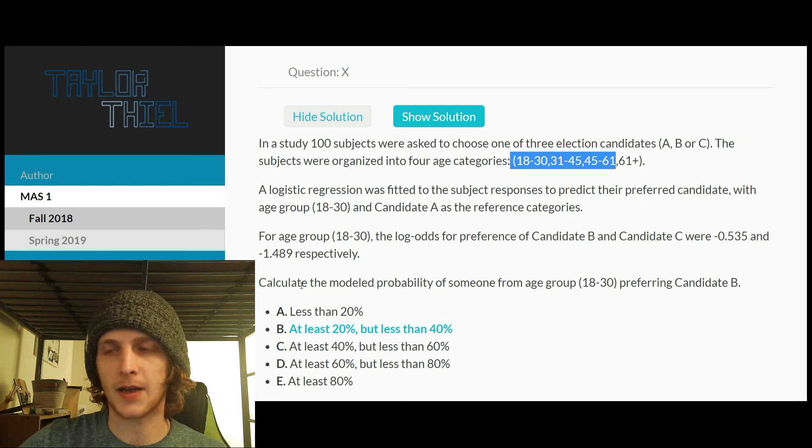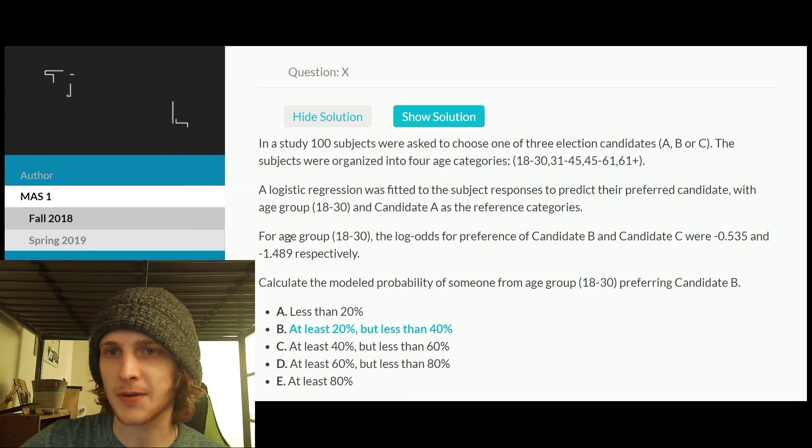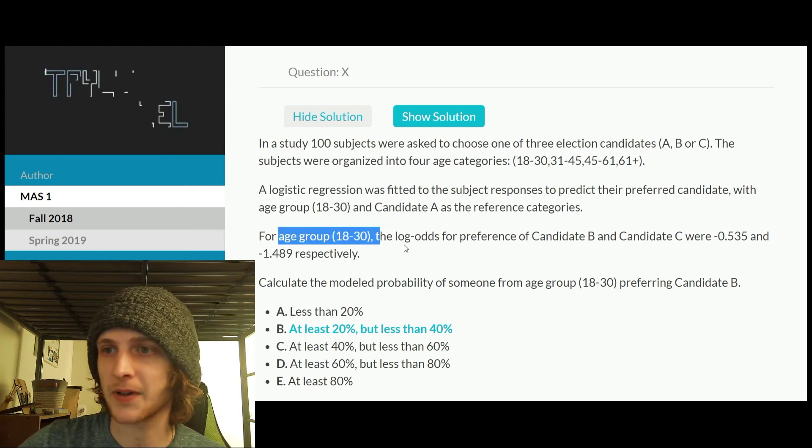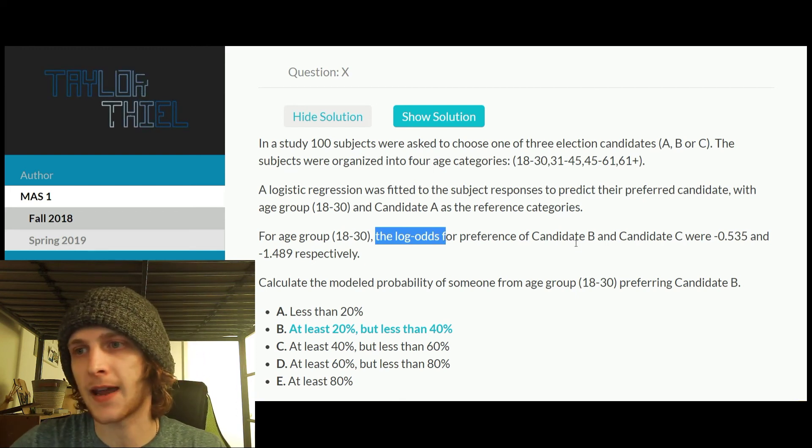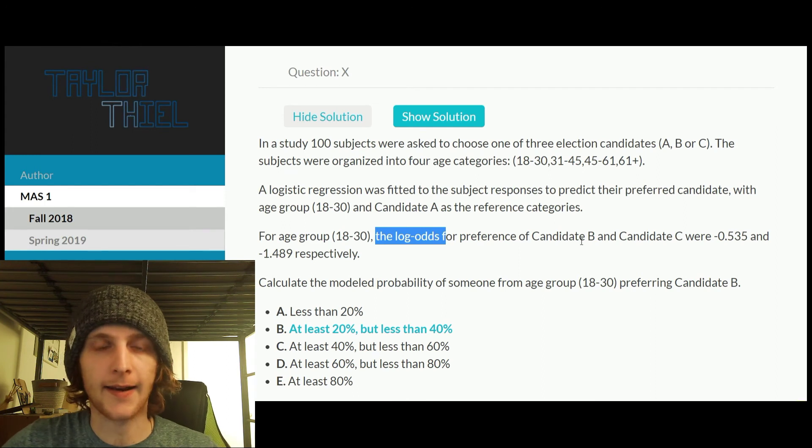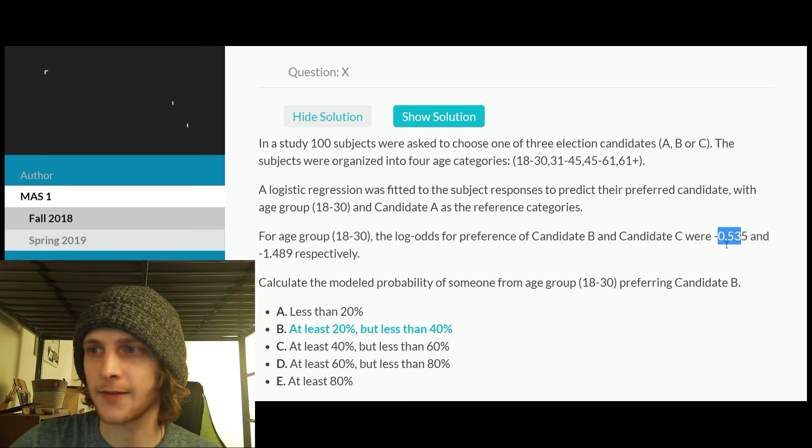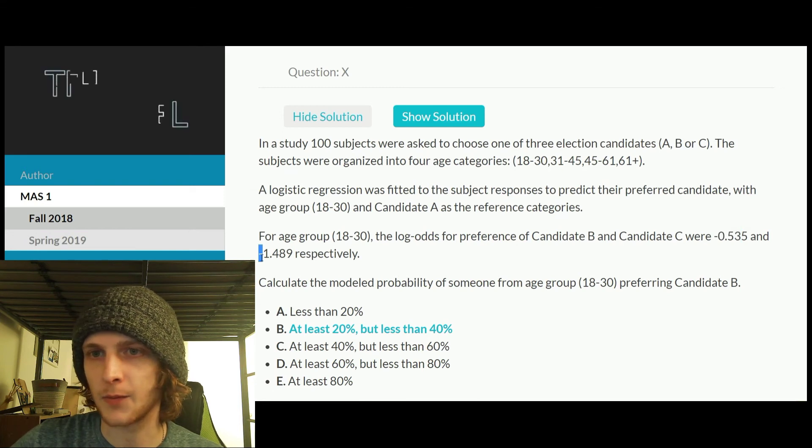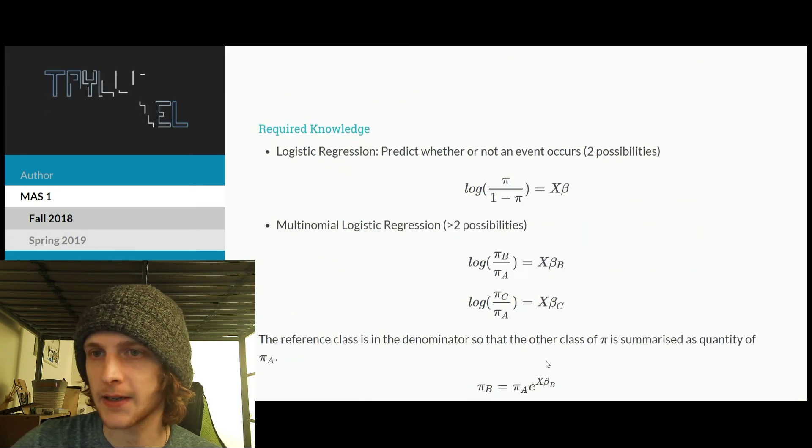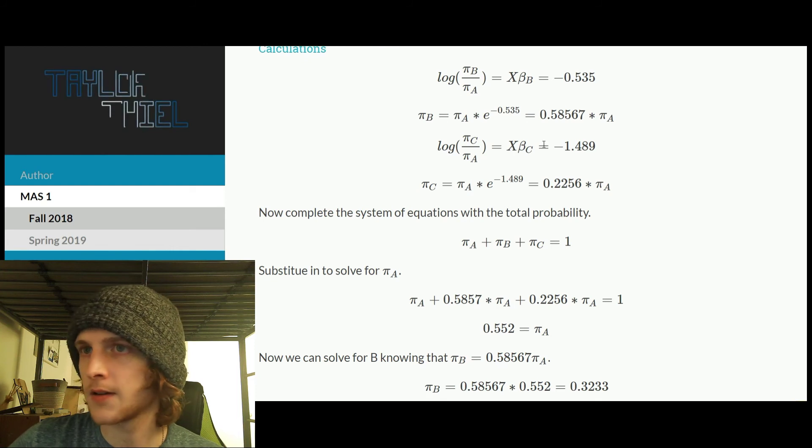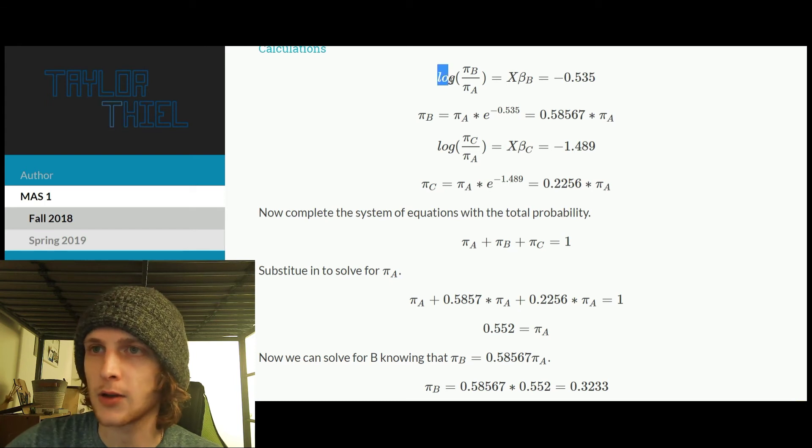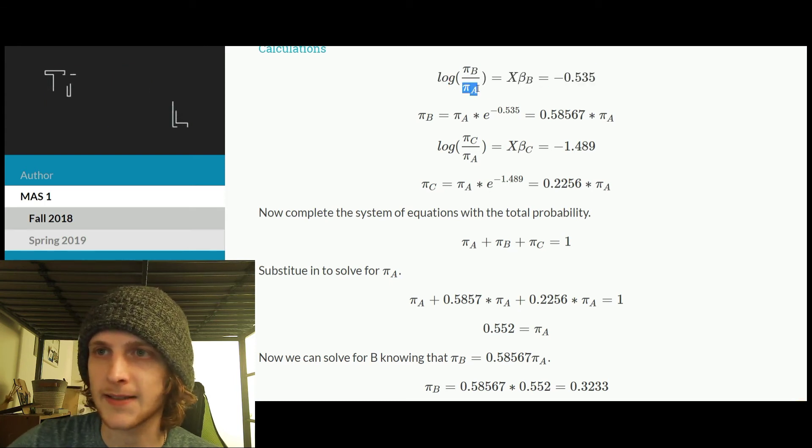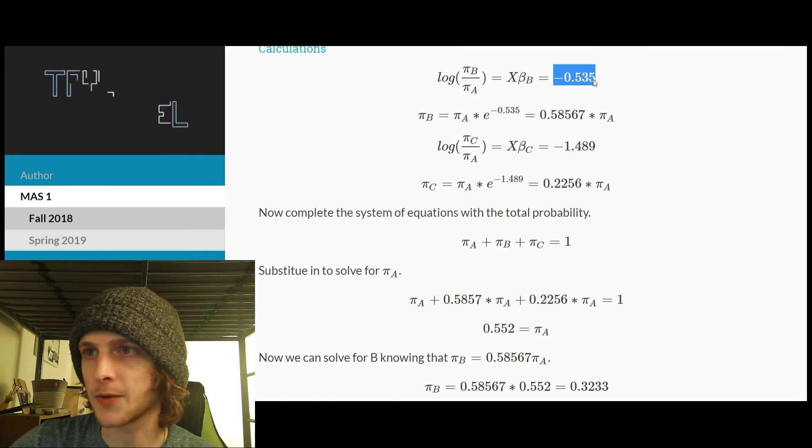what are all the different log odds for our different classes? So here we're saying for each group, 18 to 30, but we don't really care about that. The log odds for preference of candidate B to candidate A, our reference class, is negative 0.535. And then we will get to C shortly.